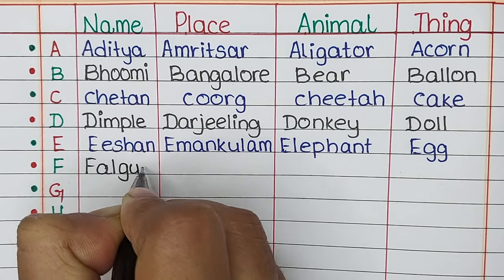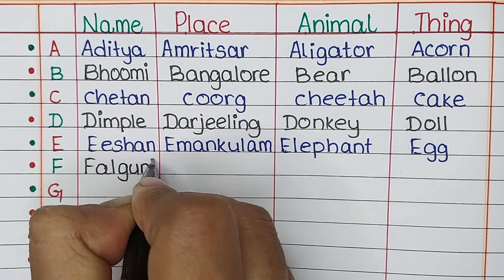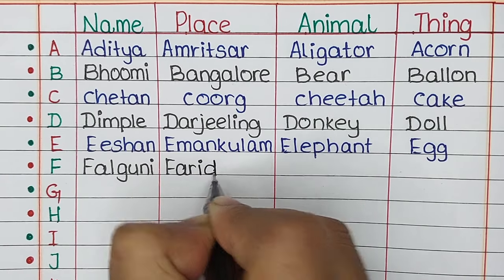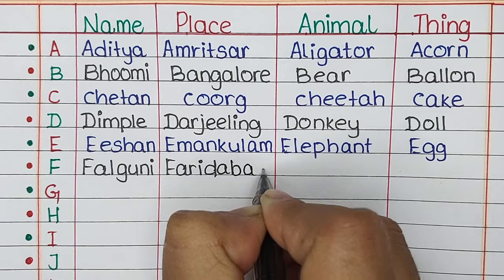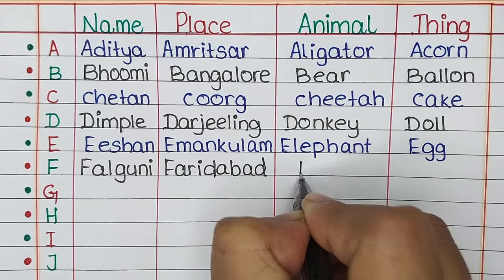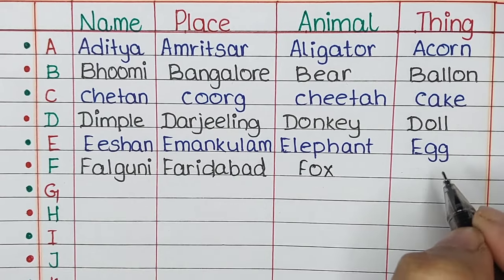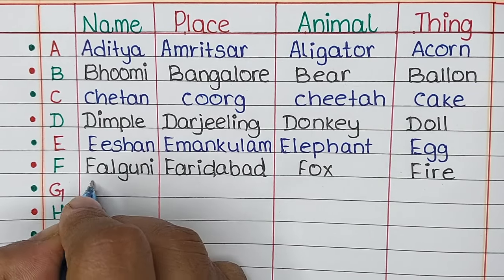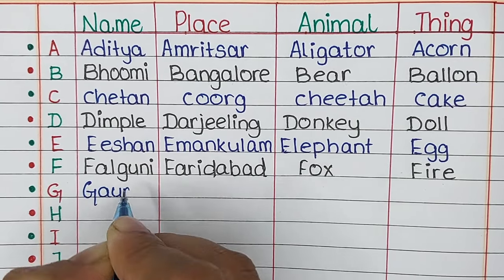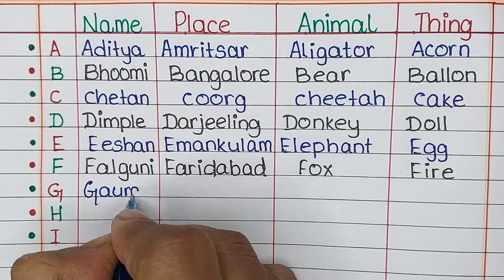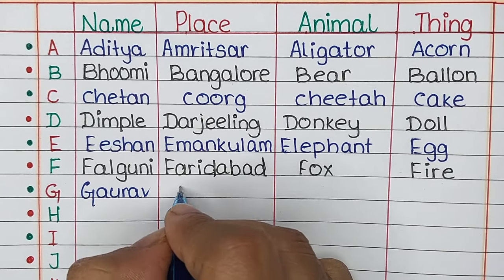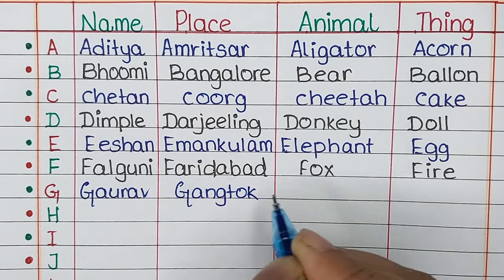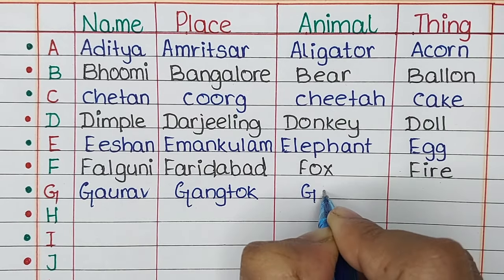The name that starts with letter F is Falguni, the place is Faridabad, the animal is Fox, and the thing is Fire. Next is letter G. The name is Gaurav, the place is Gangtok.